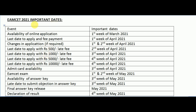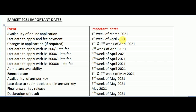Now let's see what are the most important dates for MSET 2021. Online application will start from the first week of March 2021. Last day to apply for the exam with fee payment is the first week of April 2021. If you want to make any changes in your application, you can do it between the first and second week of April 2021.